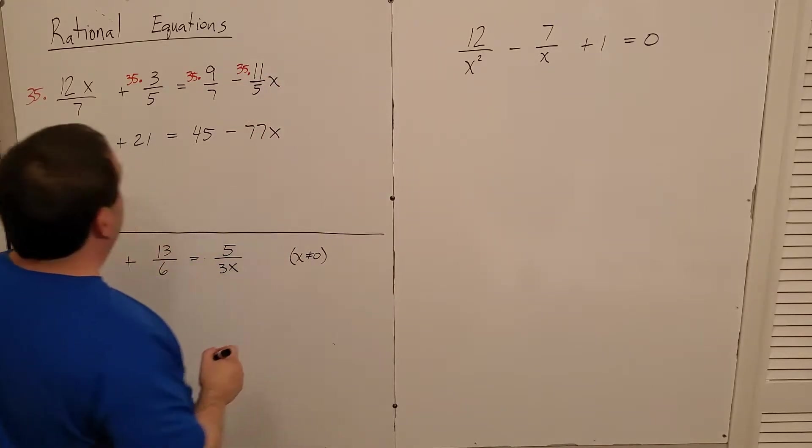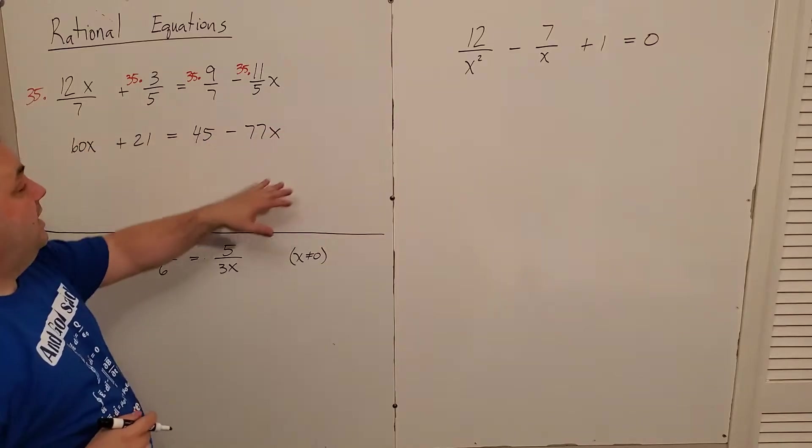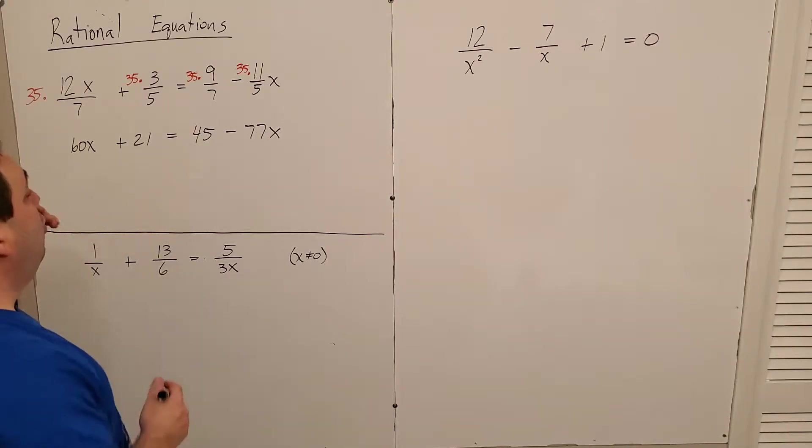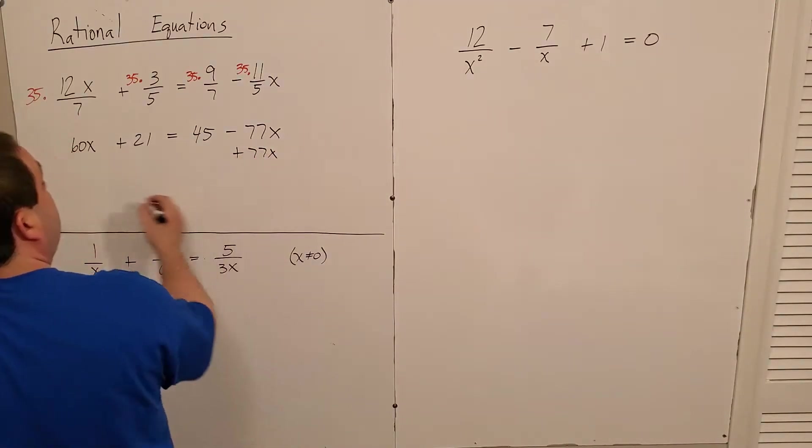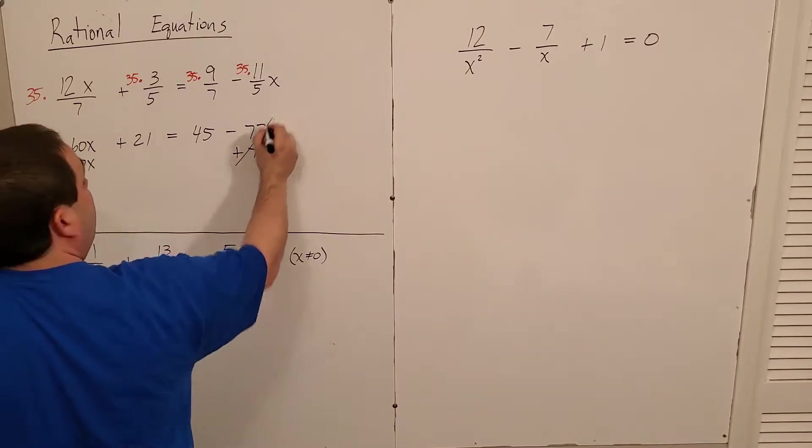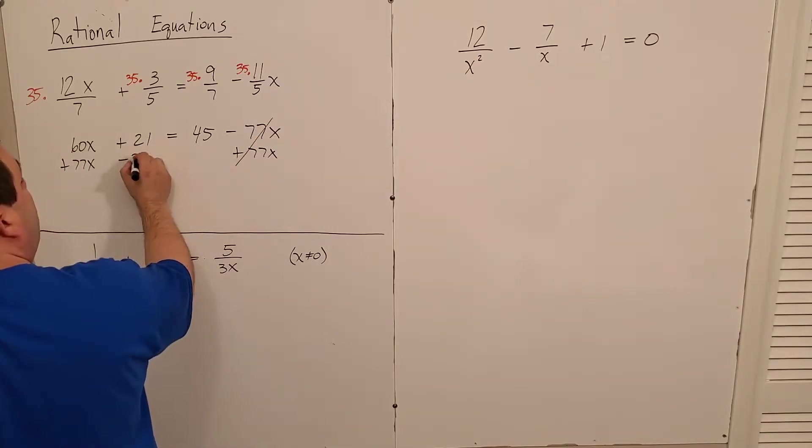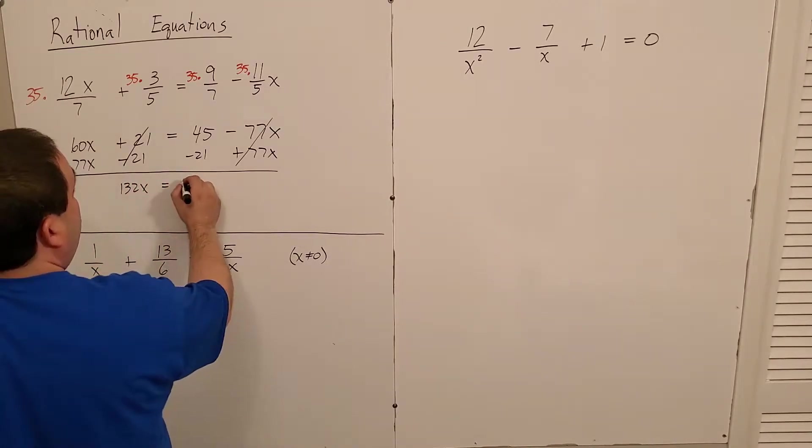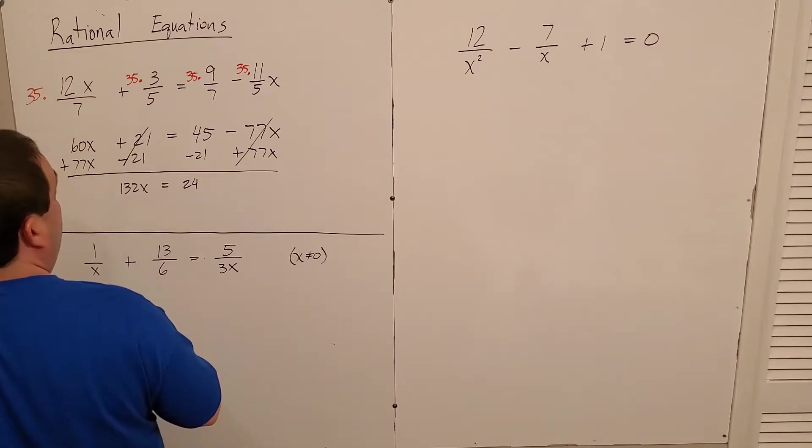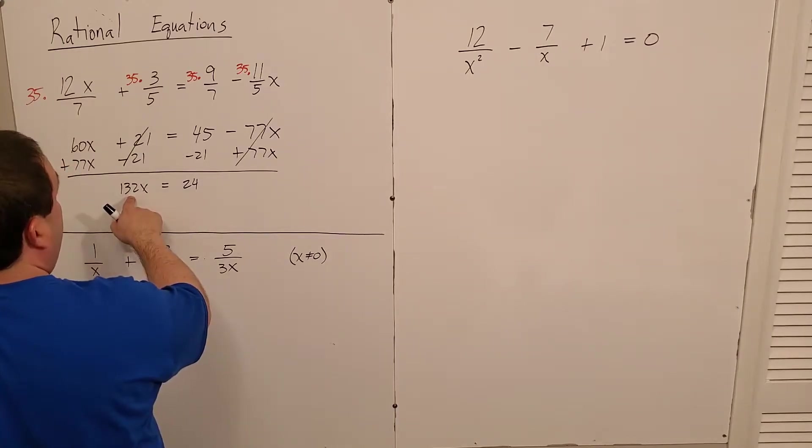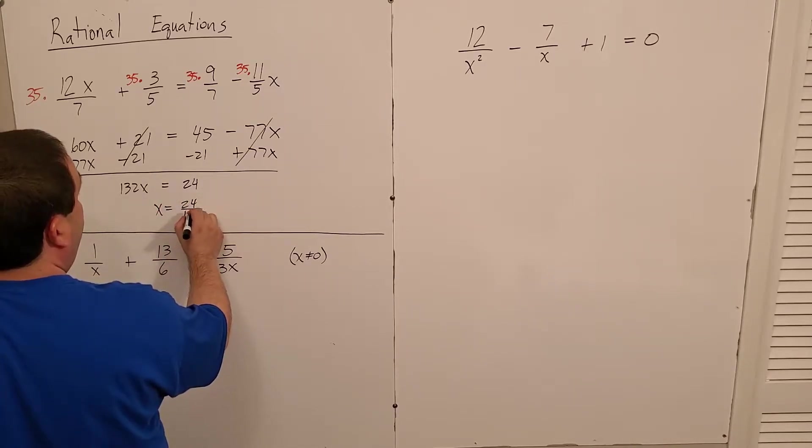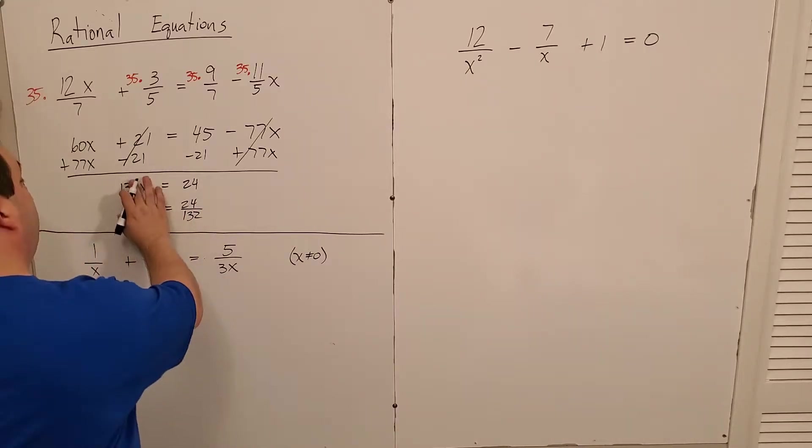Which of course now this is a linear equation. Well, technically it was before also now it's more obviously a linear equation where I would add my 77x to both sides in order to eliminate that piece and subtract the 21 from both sides in order to eliminate that piece. So I would end up with my 132x is equal to 24, which when I divide right here, I would have x is 24 over 132.